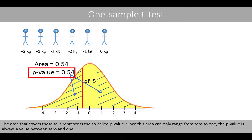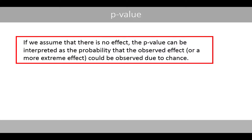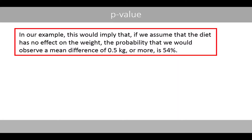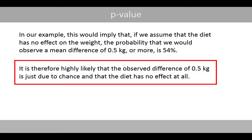Since this area can only range from 0 to 1, the p-value is always a value between 0 and 1. How do we interpret this p-value? If we assume that there is no effect, the p-value can be interpreted as the probability that the observed effect, or a more extreme effect, could be observed due to chance. In our example, this would imply that if we assume that the diet has no effect on the weight, the probability that we would observe a mean difference of 0.5 kilos or more is 54%. It is therefore highly likely that the observed difference of 0.5 kilos is just due to chance.